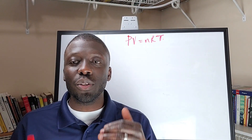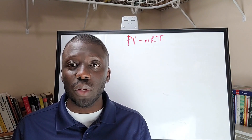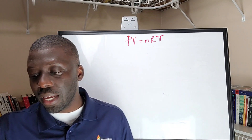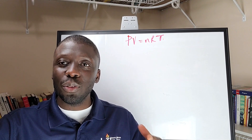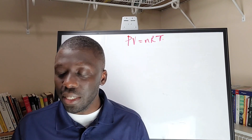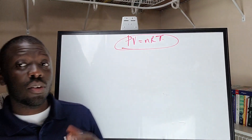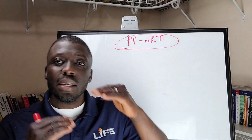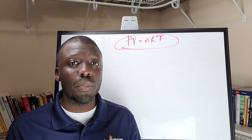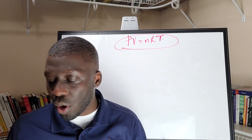Good evening. In this video, I just want to go over the PV equals NRT formula we discussed in our experiment 9, last week. So we had a balloon, we had the Erlenmeyer flask, we had CO2 that was released. We talked about the ideal gas law, which is PV equals NRT. I just want to take a step-by-step approach in how to handle this problem so that when you see something like it in the future, you'll be able to tackle the problem.